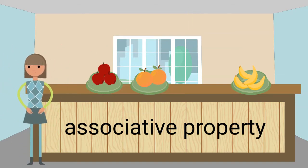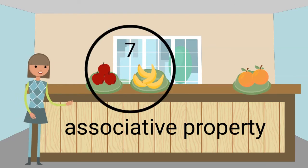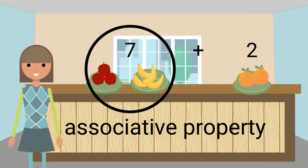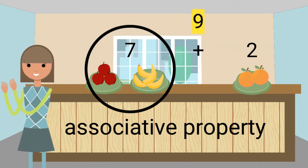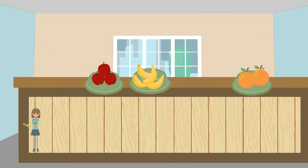We can also group the bananas and apples to make a group of 7 and add them to the 2 oranges. What does 7 plus 2 equal? You are so smart! Let's talk about subtraction before we head out.